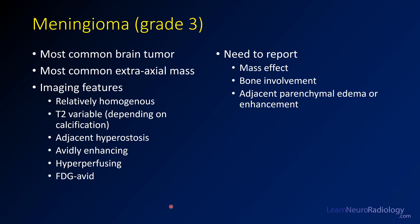Meningiomas are the most common brain tumors and the most common extra-axial masses. They typically are pretty homogeneous, can be T2 variable but are sometimes bright, and can have T2 dark areas of stipple calcification or linear spoke-like T2 hypointensities. You can get hyperostosis of the adjacent bone. They are typically very avidly enhancing and hyperperfusing, and also FDG avid, so PET will not necessarily help differentiate from lymphoma or metastatic disease. You have to think about mass effect, bone involvement, and whether the adjacent parenchyma is involved with edema or enhancement.